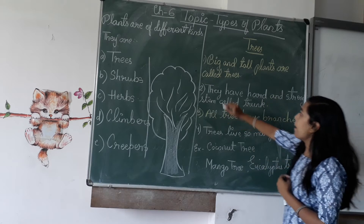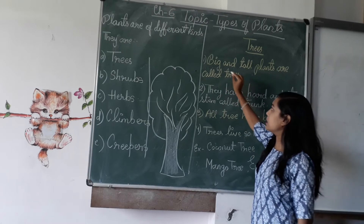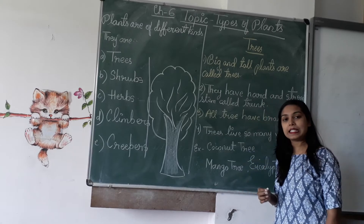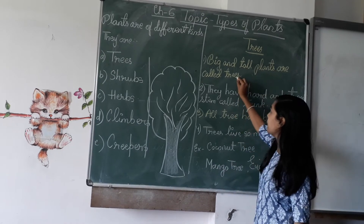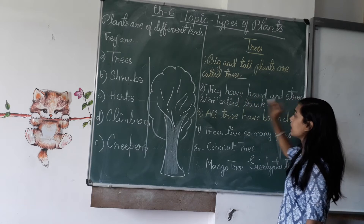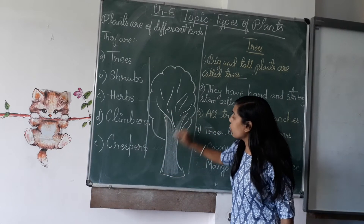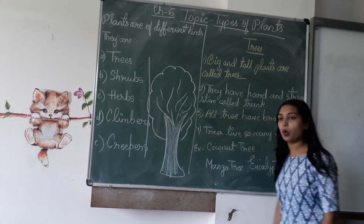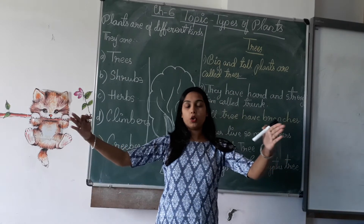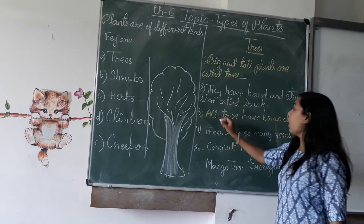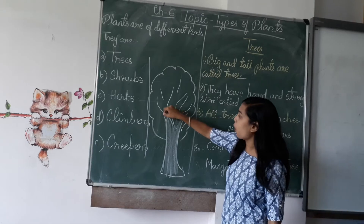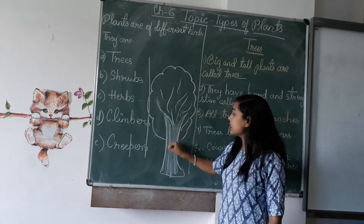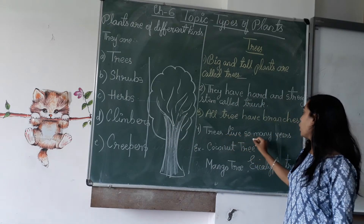What are trees? Big and tall plants are called trees. They have a hard and strong stem called trunk. Big means 'bade,' tall means 'oochay' — so bade aur oochay plants ko trees kehte hain. They have a hard and strong stem called trunk. All trees have branches, and branches are connected with the trunk.